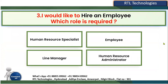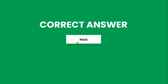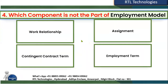The third question: I would like to hire an employee — which role is required? Oracle Fusion Applications is an RBAC (Role-Based Access Control) application. To access the application you need a role and data access via the Security Console. The options are: Employee role, Line Manager, Human Resource Administrator, or Human Resource Specialist. When you want to hire an employee, the Human Resource Specialist role is required.